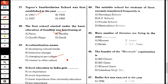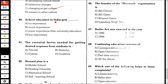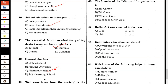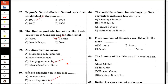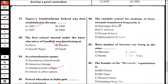The profession of education needs changing as per culture. School education in India gets much importance. The essential factor needed for getting the desired response from students is stimulus — Howard Plan. The alternative school self-experience from society is the objective of mobile schools. The suitable school for students of government servants transferred frequently is KV schools. More number of literates are living in the state of Kerala. The founder of the Microsoft organization is Bill Gates.